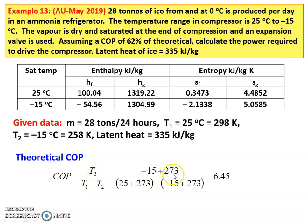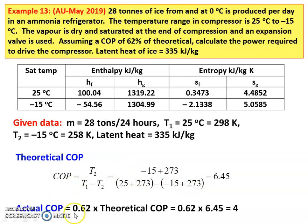So minus 15 plus 273 divided by (25 plus 273) minus (minus 15 plus 273) equals 6.45. The theoretical or Carnot COP equals 6.45. The actual COP is 62% of the theoretical value, so 0.62 into 6.45 equals 4. The actual COP of the refrigerator is 4.